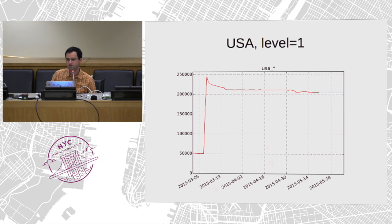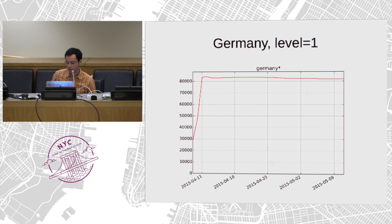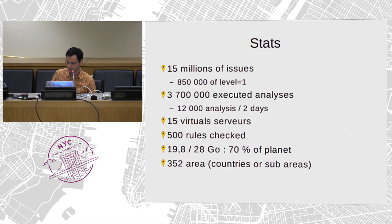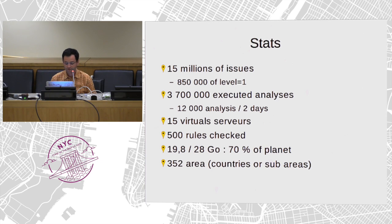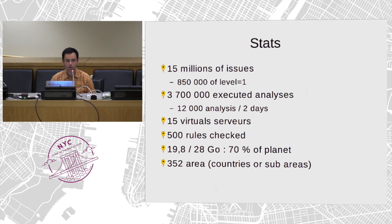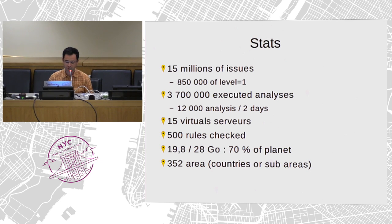I hope you start using it to check more errors. In Germany, the graph is flatter because Osmose opened there more recently. We have many servers around the world and many, many rules to check the data. If you want an update of the rules on some area or a new check, it's possible to ask and we'll do it. Also, if you want to add an open data set for merging, that's possible too.